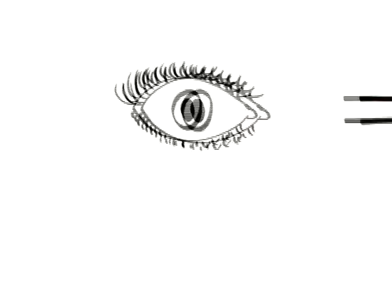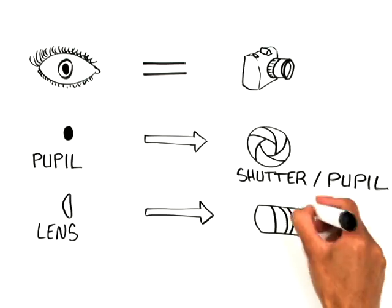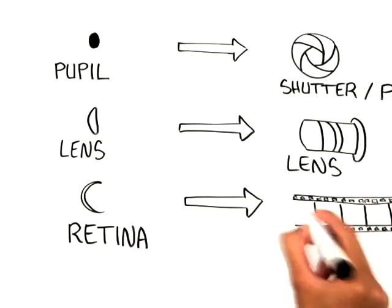The eye works much like a camera. There's a shutter, also known as a pupil. There's a lens, and then there's film in the back of the eye, which is called a retina.